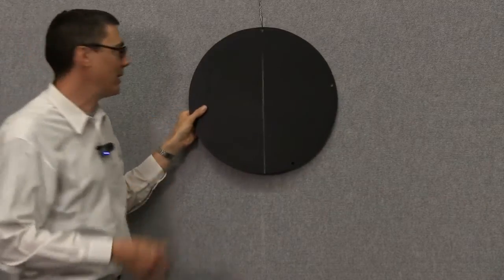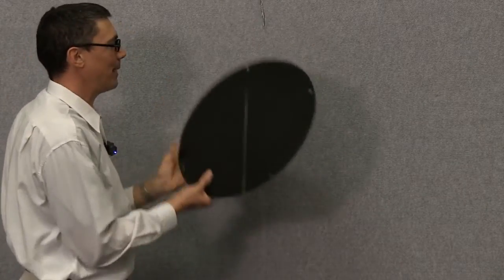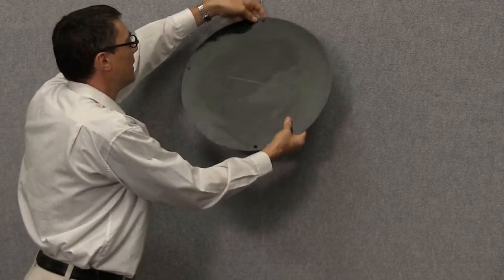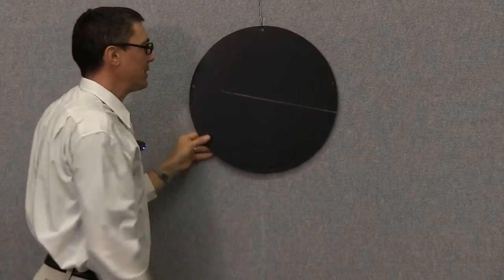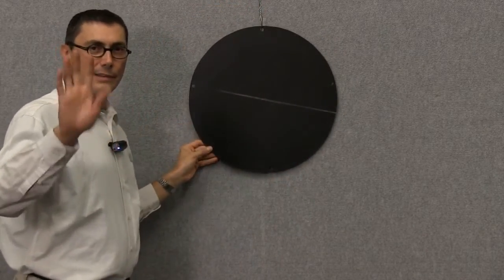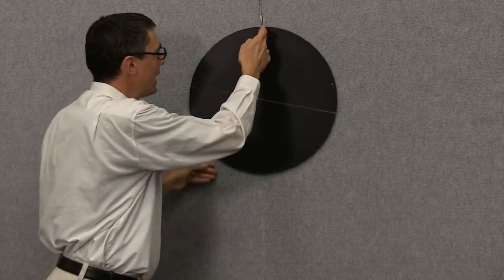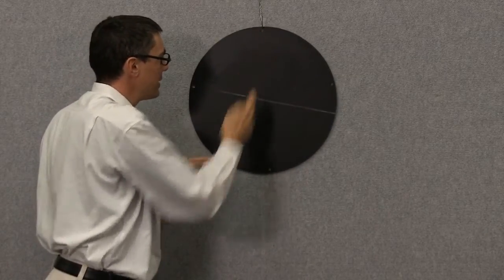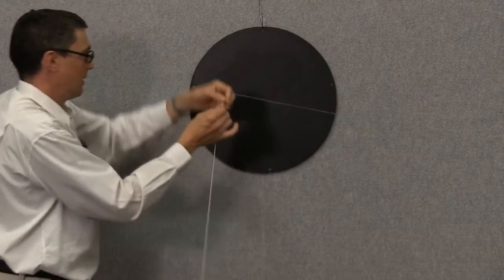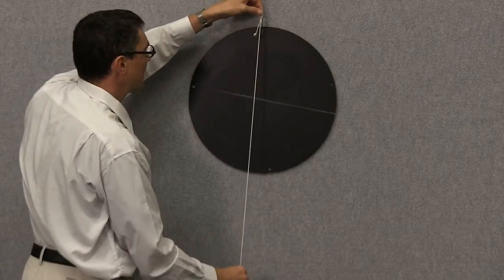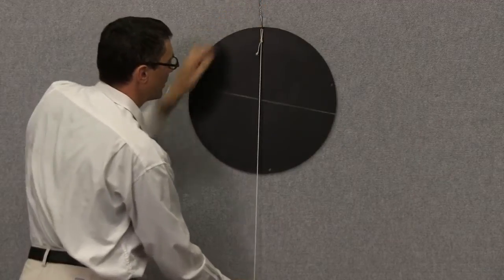You might have a guess where it is, but we're going to be experimental about it and test it. Now if we suspend it from another position, that rule still applies. The center of mass still lies somewhere under that point of suspension. So now we've changed the position of point of suspension. That means that the center of mass should be at the intersection of those two lines.